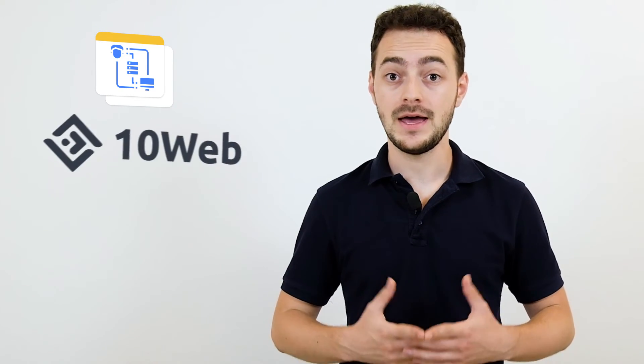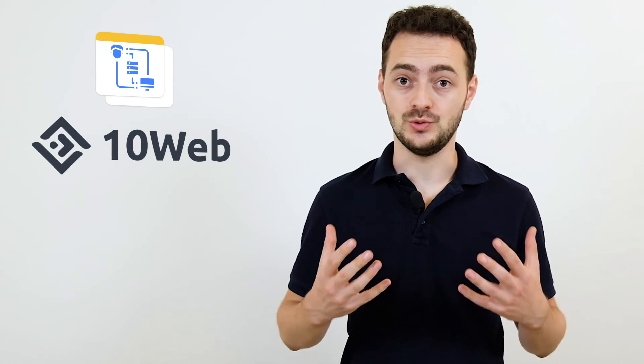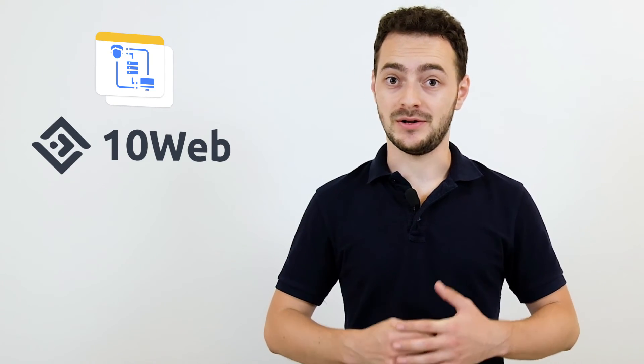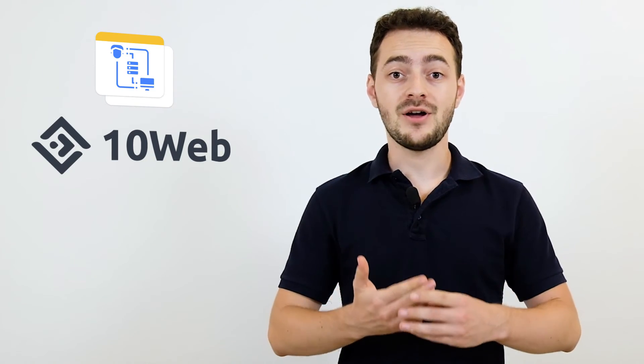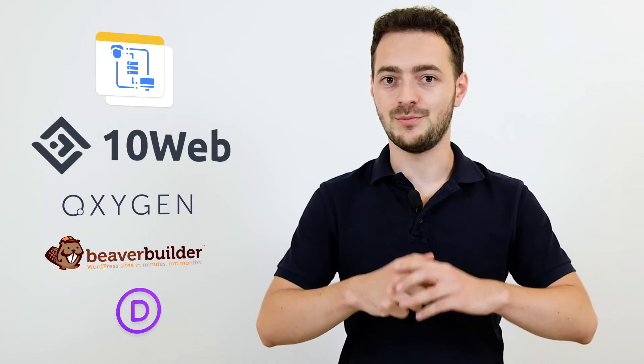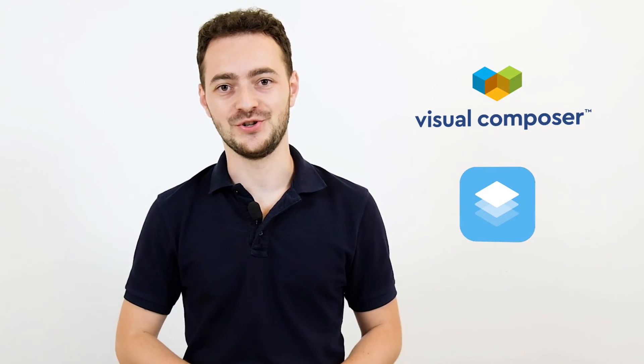So what's the conclusion? Well, if you want to have the whole agency toolkit and still save up, then go for 10Web. And if you're looking to create something unique and complex and are ready to spend over a hundred bucks on it, then Oxygen, Beaver and Divi are the best choices for you. And in case you just want to get the basic toolkit and layouts, then choose Visual Composer and Site Origin.